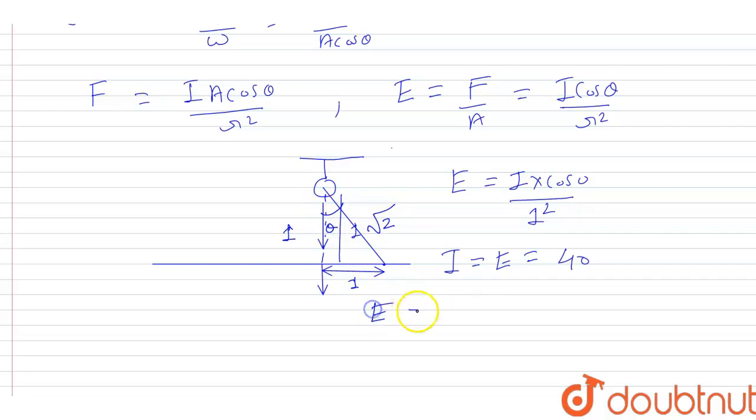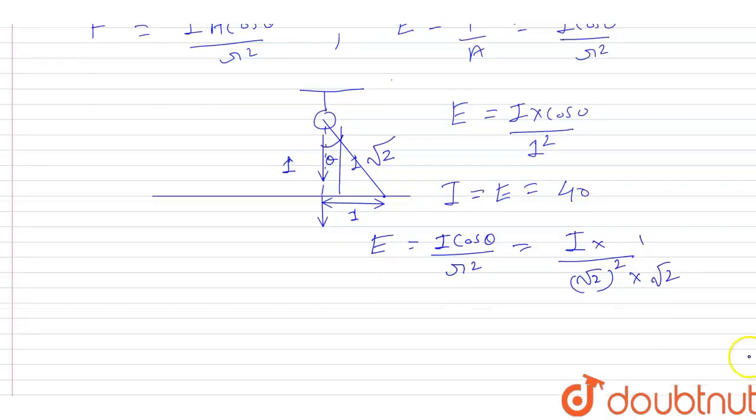Right, so again, now illuminance is equal to I cos theta upon square of r. So in this case, r is root 2, so I into cos theta. I am not writing cos theta right now. Cos theta will be 1 by root 2, and into 1 by root 2, that means 1 upon root 2. So now illuminance E will be equal to...